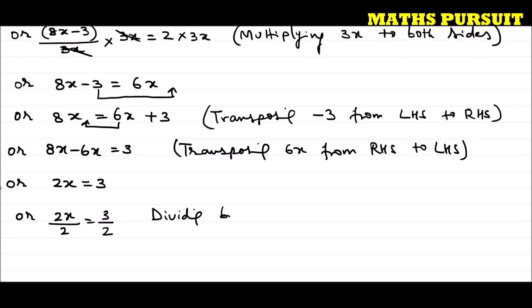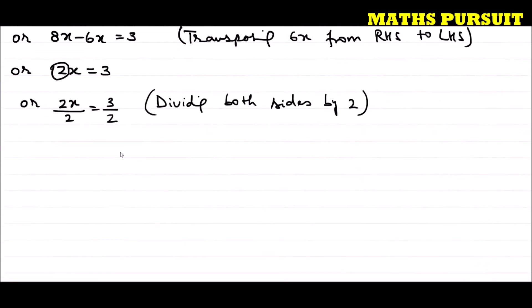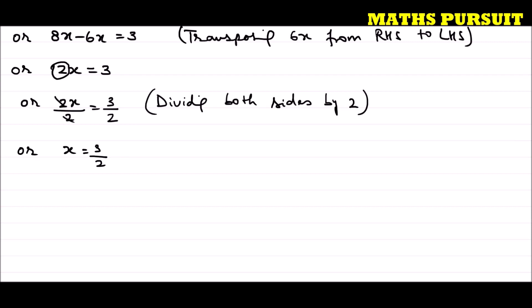I am dividing both sides by 2. Why? I want to eliminate the 2 from x. So 2x divided by 2 is equal to 3 divided by 2. These 2s cancel out, and we get x is equal to 3 upon 2.